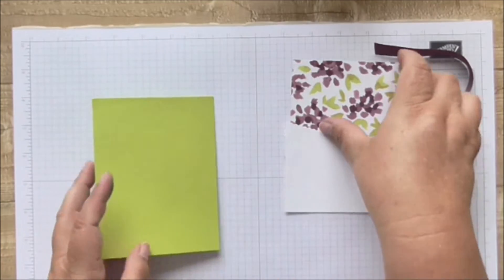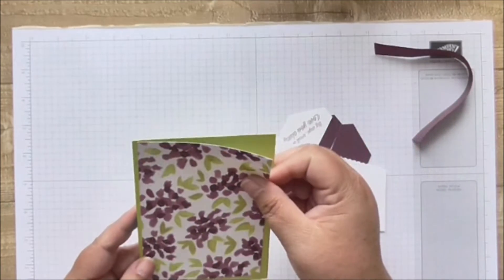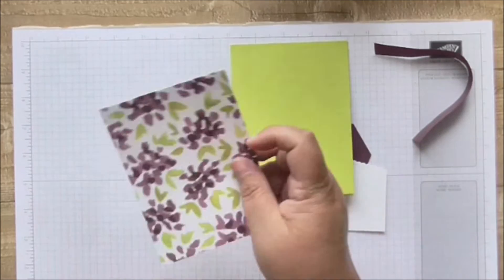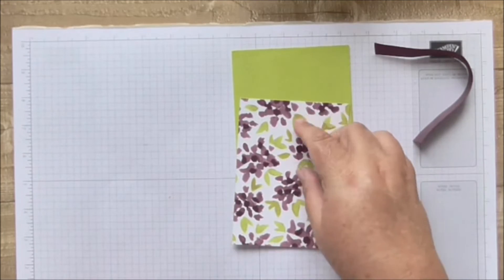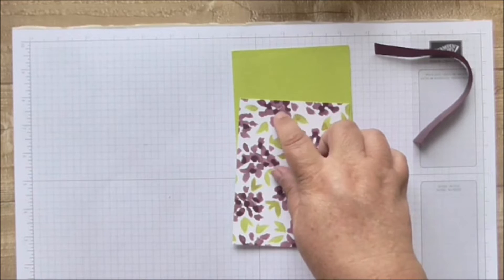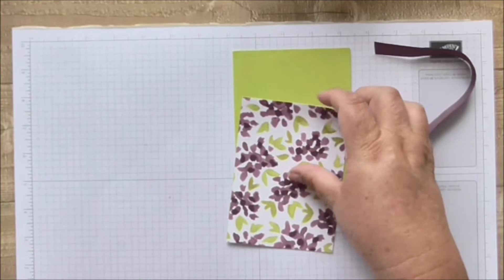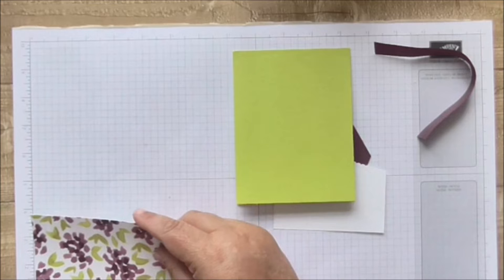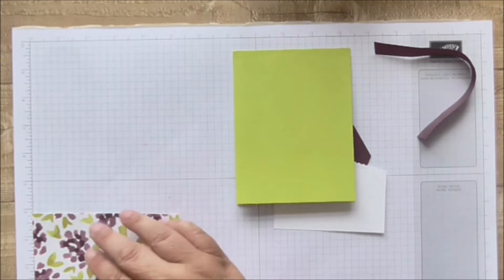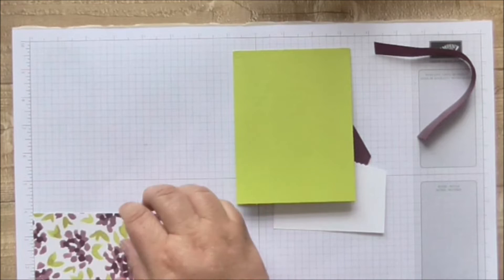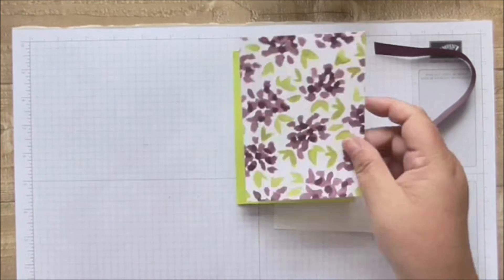Then I've got a piece of this lovely DSP with the purple and green there, the lime green. In Stampin' Up terms this is called lemon lime twist, this is called fresh fig, but to you it's purple and green. It's five and an eighth by three and seven eighths inches.